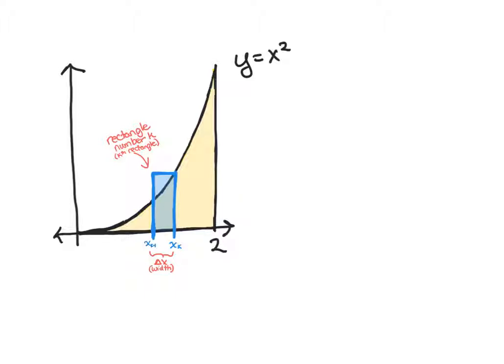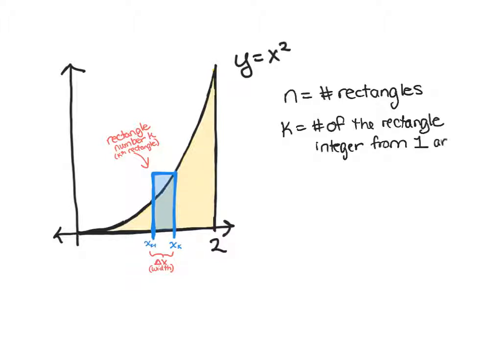And then taking the limit as n goes to infinity. So we're going to use n as our number of rectangles. This blue rectangle example rectangle I've drawn, we're going to assume that's the kth rectangle, so first, second, third, fourth, kth. So k is the number of the rectangle we're on, and k is always an integer starting at 1 and counting to n.